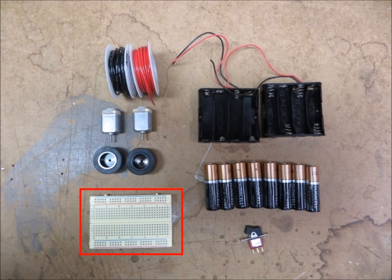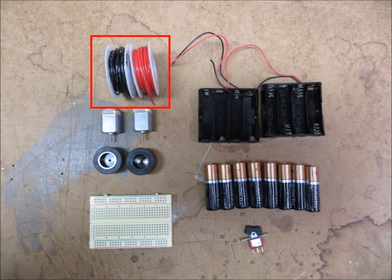We used a small breadboard to make things easier to wire up, and some hookup wire. We're showing the red and black wire here, but as you'll see later, we ended up using green and orange to help us keep everything straight.